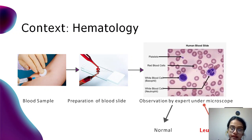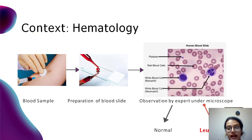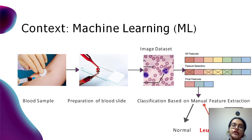In the context of hematology, how is leukemia detected? The first step is that a blood sample is taken from a human body, and then a corresponding blood slide is prepared. After that, an expert observes the slide under a microscope and takes the final decision whether the human has leukemia or not.